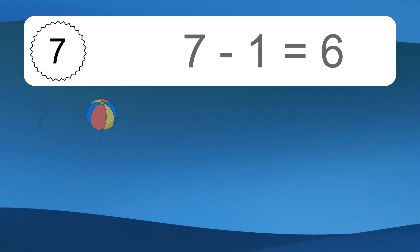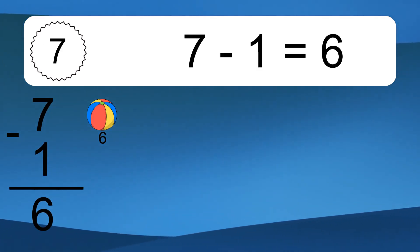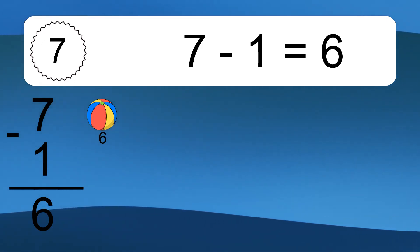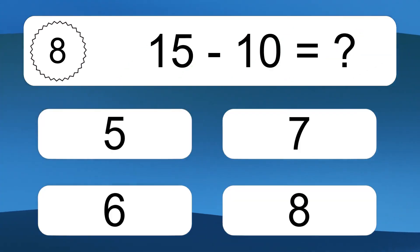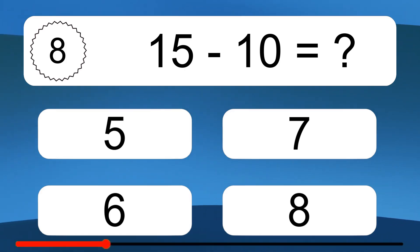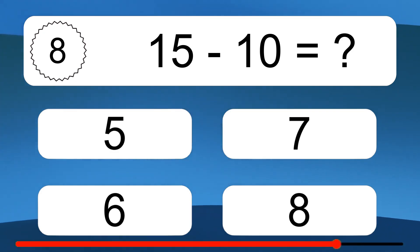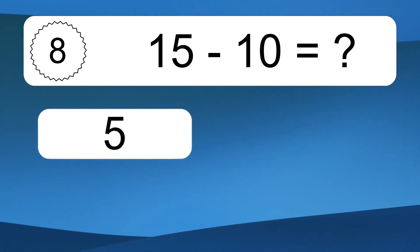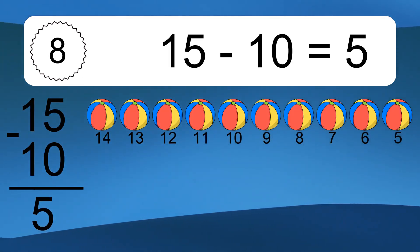7 minus 1 equals what? 7 minus 1 equals 6. Let's count it: 6.